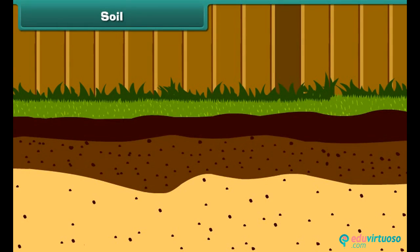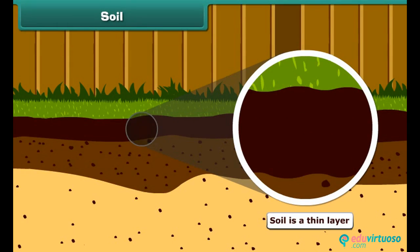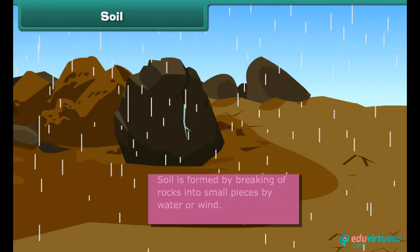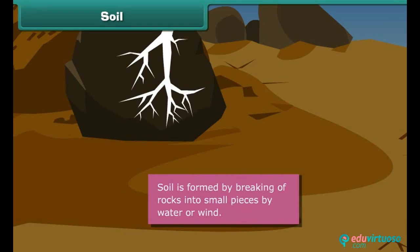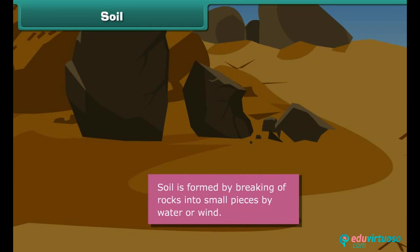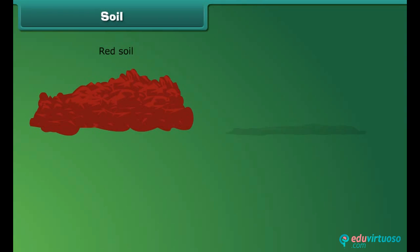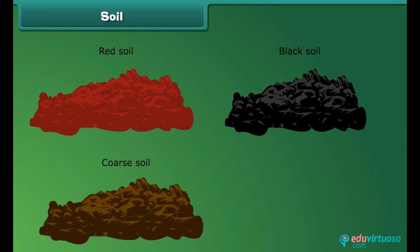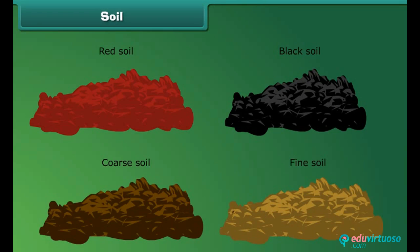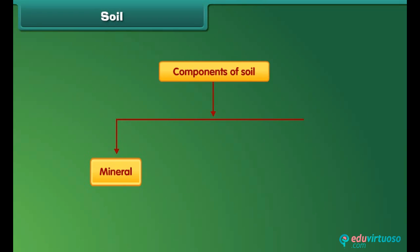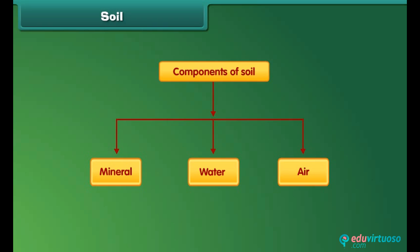Now we move on to another interesting topic: soil. Soil is a thin layer of the earth's crust. It is formed by the breaking of rocks into small pieces by the influence of water or wind. Soils are of different types such as red soil, black soil, coarse soil, and fine soil. Mineral, water, and air are the three important components of soil.